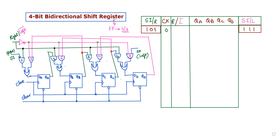The other type of register is the shift register. A shift register is used to shift data between the flip-flops and outside the flip-flops. It is used to transmit data between flip-flops and also outside the shift register.